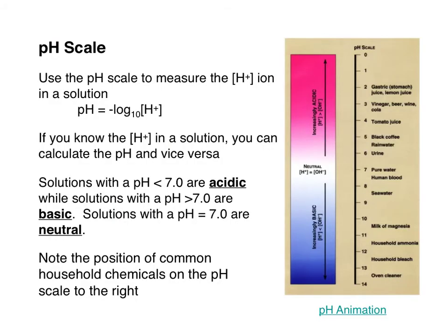Since the pH scale runs from 0 to 14, it's useful to measure the amount of H+ in solution. There's a simple mathematical relationship to calculate pH if we have H+ concentration: pH equals the negative log of the H+ concentration — where those brackets are shorthand for concentration. As a sophomore you may not be familiar with logarithms yet, but you will be by the end of the year. You can plug the H+ concentration into the formula with your calculator to determine the pH value.